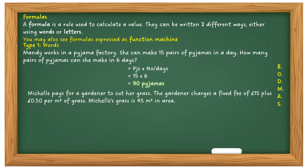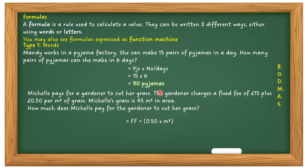Michelle pays a gardener to cut her grass. The gardener charges a fixed fee of £15 plus 50 pence per square metre. Michelle's grass is 45 square metres — how much does she pay? Just create your own little BODMAS formula: £15 plus £0.50 times 45. Work through the process and the answer is £37.50. That's BODMAS in action in conjunction with formulas.